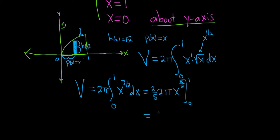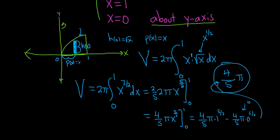So this is equal to 4 fifths pi x to the 5 halves. Just rewriting it one more time for clarity. From 0 to 1. So we plug in the 1. So we get 4 fifths pi times 1 to the 5 halves minus 4 fifths pi times 0 to the 5 halves. But this is just 0, and 1 to the 5 halves is 1. So we just get 4 fifths pi. And that would be the volume and the final answer.